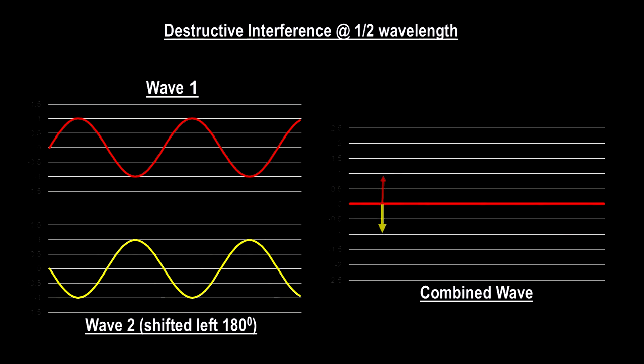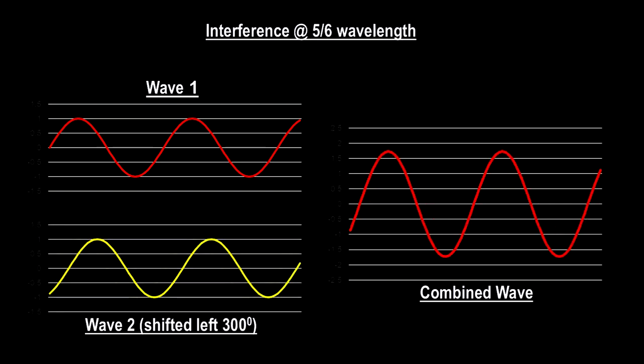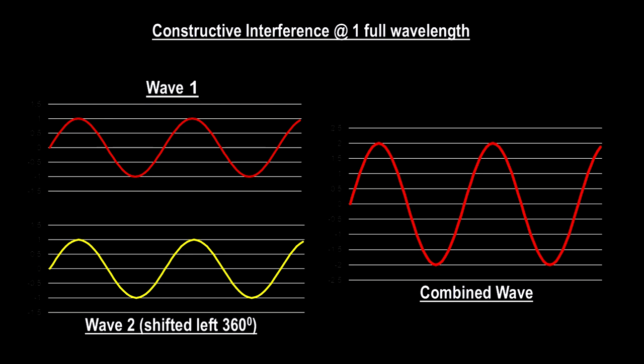The waves, in effect, cancel each other out. If we keep going, we move back into complete constructive interference as we reach one full wavelength. What Michelson did was to leverage this light interference behavior in what we now call an interferometer.